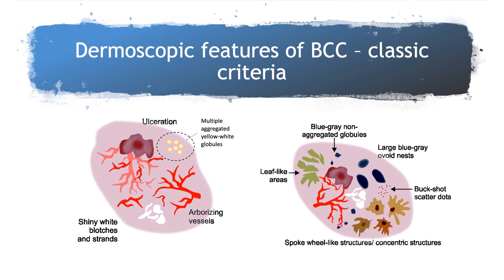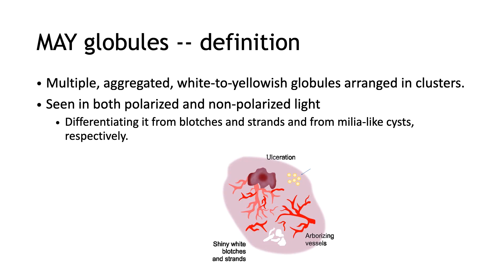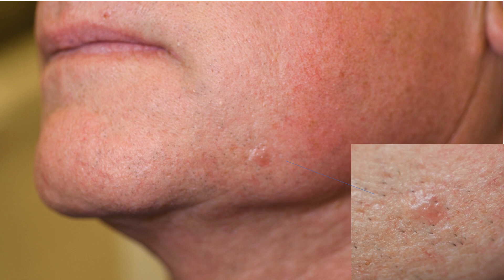So what are MAYG globules? These are multiple aggregated white to yellow globules arranged in clusters. They are seen in both polarized and non-polarized light, and this is very important because this is the way to differentiate them from shiny white blotches and strands, which are seen only in polarized light, and from milia-like cysts, which are seen better in non-polarized light.